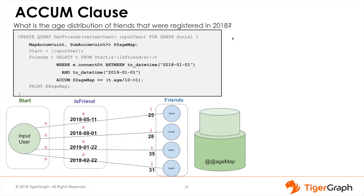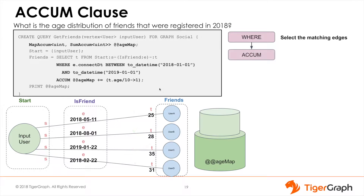When we run the query, the where clause comes first to select only the edges that match the conditions we provided. We can see that only the first, second, and fourth edges satisfy the where condition, since we specify to only select users who became friends within the 2018 calendar year. Then the ACCUM clause executes, performing the accumulation tasks on each edge in parallel.